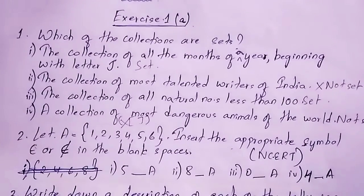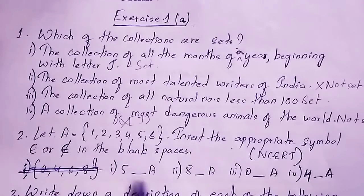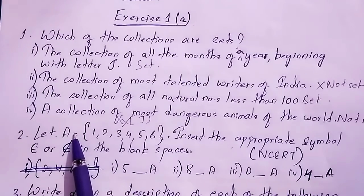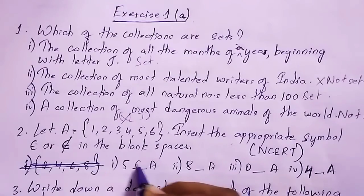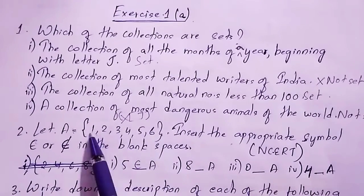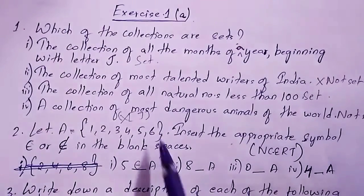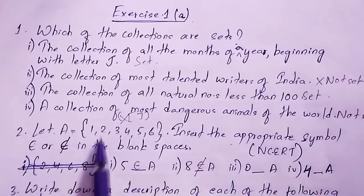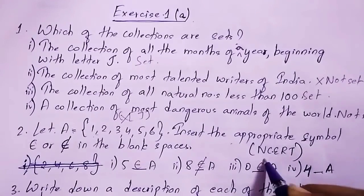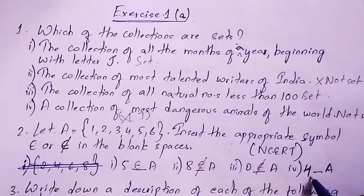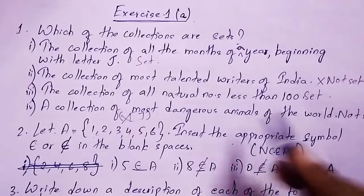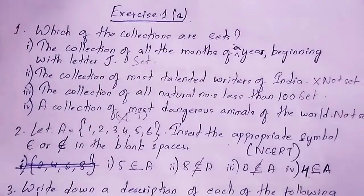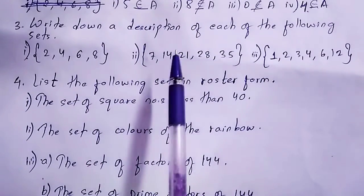Number 1: 5 belongs to A, since 5 is in the set. Number 2: 8 does not belong to A, because only 1 through 6 are there. Number 3: 0 does not belong to A, as 0 is not in the set. Number 4: 4 belongs to A, since 4 is present. This is straightforward.